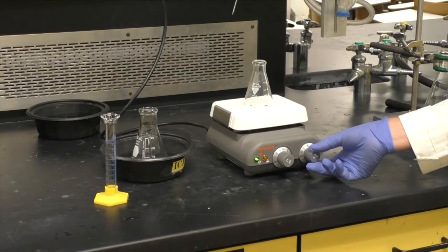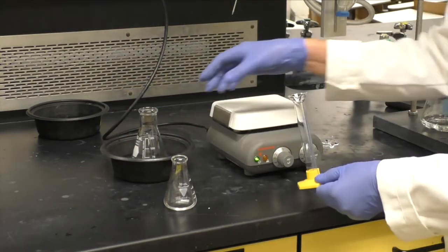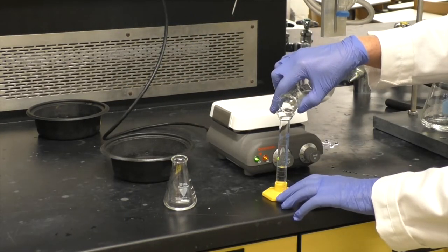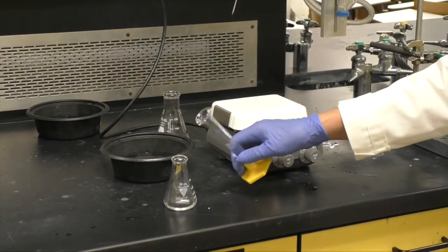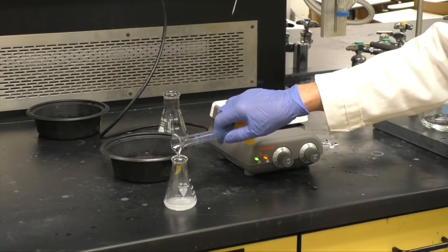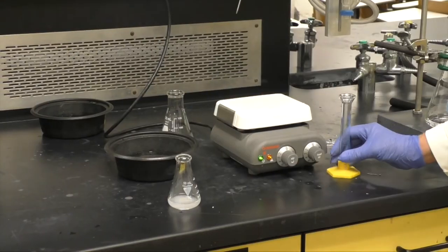Once the solid has dissolved, immediately remove the flask and add 6 milliliters of chilled water. Crystals will begin to form. After about 5 minutes, move the flask to an ice bath.